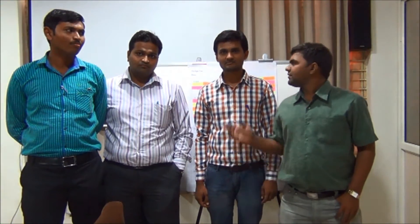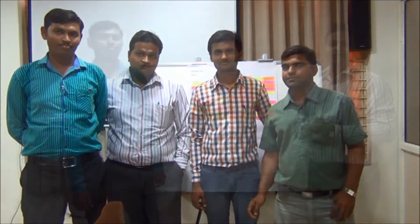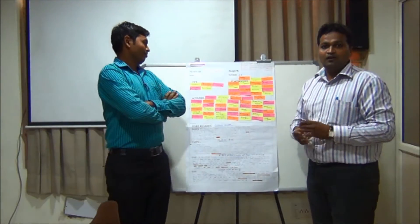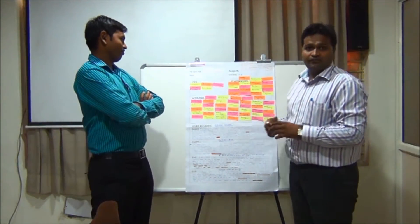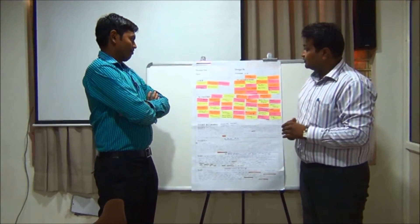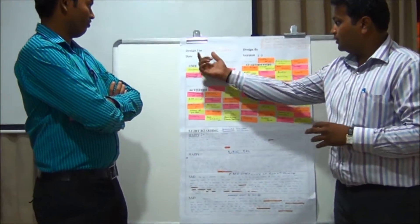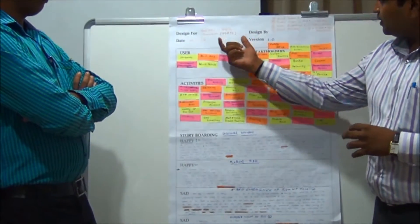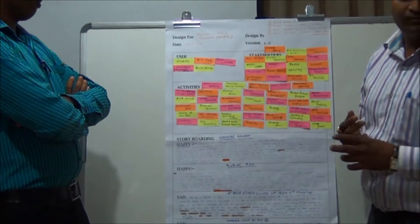We are making these canvases, and for the first canvas we take up a design problem of GSRDC — problems in public transport. This is our first canvas: empathy mapping. Our problem is the GSRDC public transportation system.